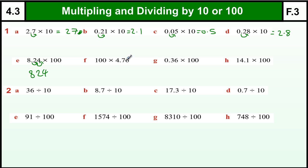Times 4.76 by 100. One place times it by 10, two places times it by 100, so it becomes 476. 0.36, one place, two places, equals 36.